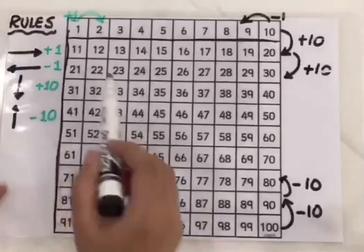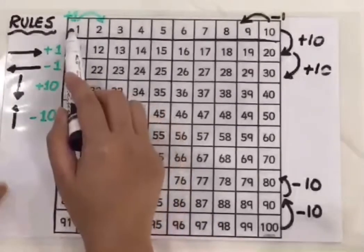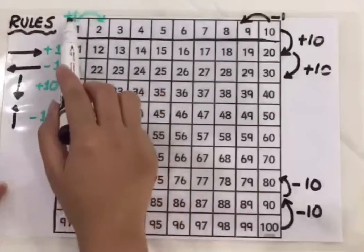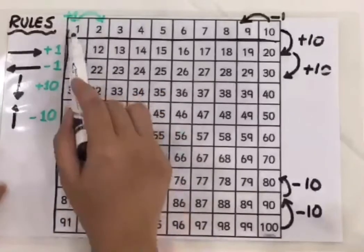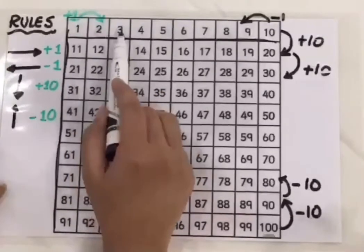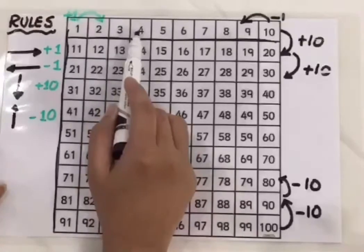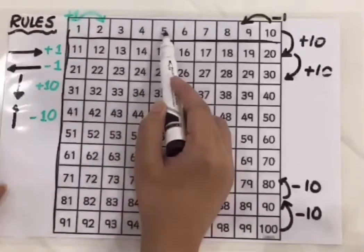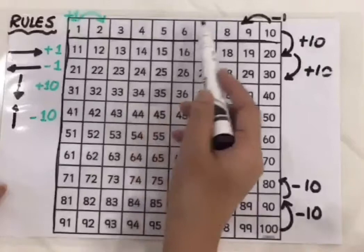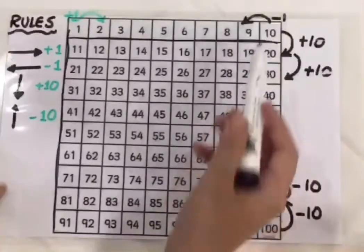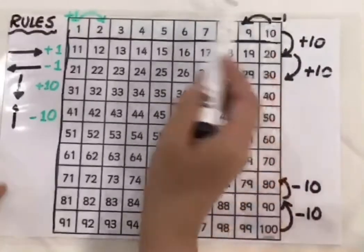Now when we move in a row, we are moving from left to right. So we are going to add 1 because 1 plus 1 gives me 2, 2 plus 1 gives me 3, 3 plus 1, 4, 4 plus 1, 5, 5 plus 1, 6 and so on.